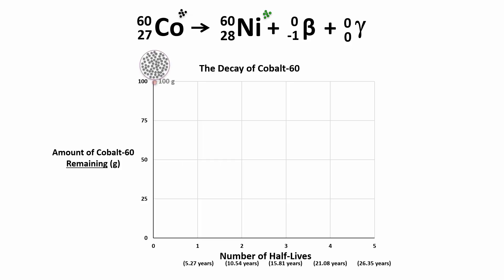So let's say you start with 100 grams of cobalt-60. After 5.27 years, one half-life, half of the cobalt-60 atoms will have decayed, and you will have only 50 grams of cobalt-60 left.